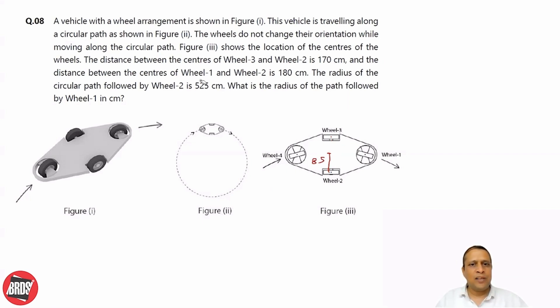The distance between center of wheel 1 and wheel 2 is 180. So wheel 1 and wheel 2, this distance is equal to 180. They are saying the radius of the circular path followed by wheel 2 is 525 centimeters. Wheel 2 is here. So the radius, this is 525.